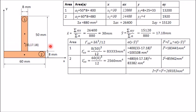For area one, the side parallel to the x-axis is 8 mm (b = 8) and the other side (height) is 50 mm, so Ī₁ = 8 × 50³ / 12. For area two, the parallel side is 60 mm (b = 60) and the other side is 8 mm, so Ī₂ = 60 × 8³ / 12.